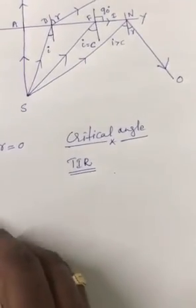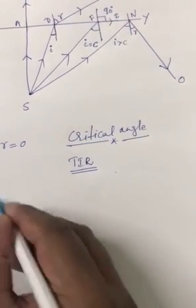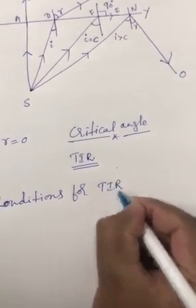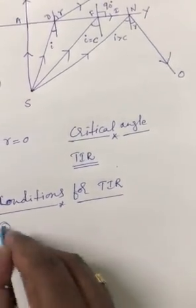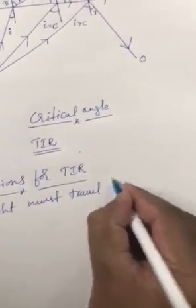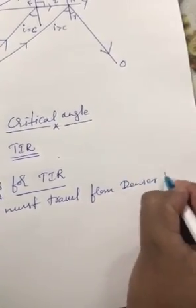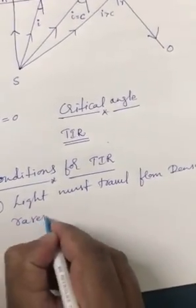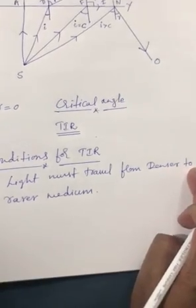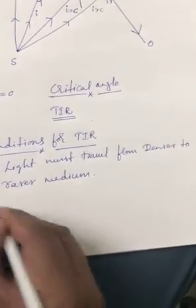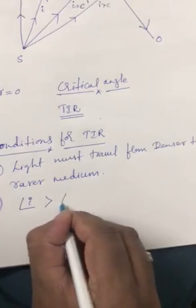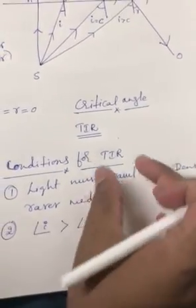What are the two conditions for total internal reflection? First condition: the light must travel from denser medium to rarer medium. Second condition: the angle of incidence must be greater than the critical angle. Only then can we achieve TIR. This is the important point to remember.